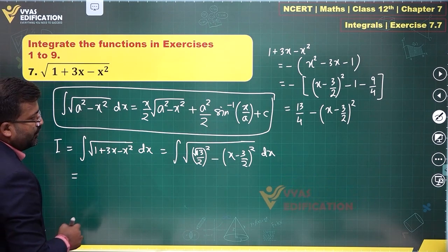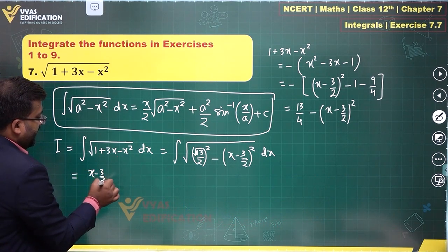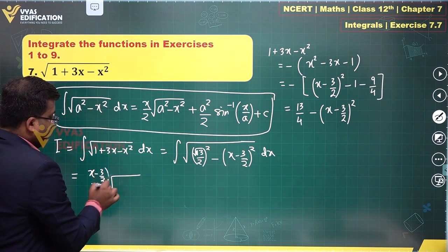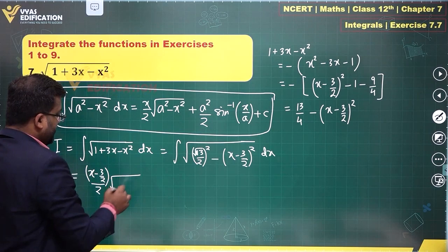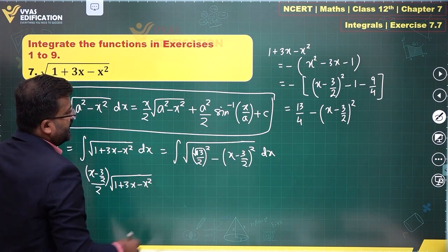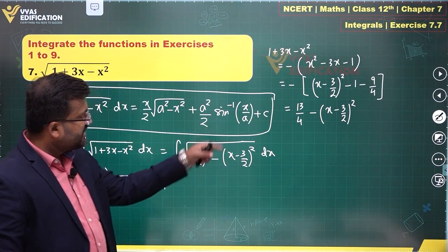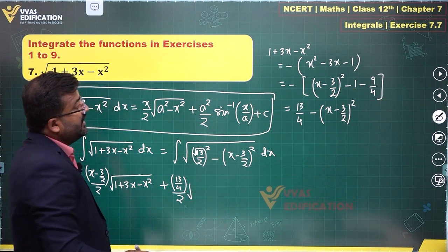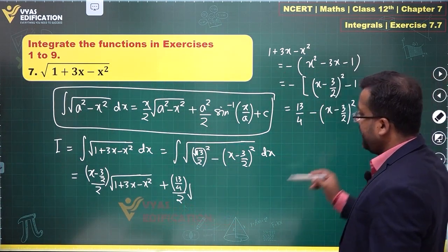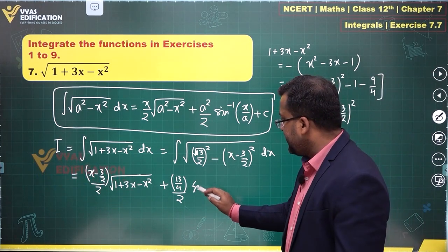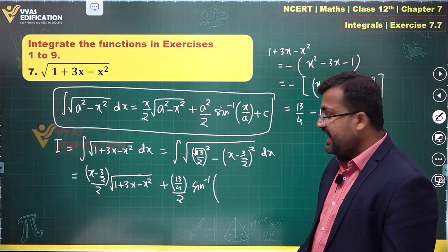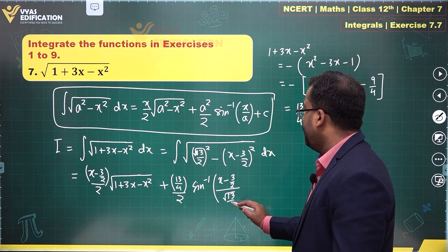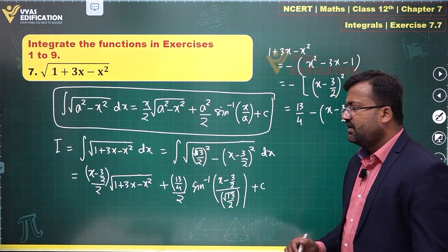Applying the formula: instead of x we have (x - 3/2), so the first term is (x - 3/2)/2 times √(1 + 3x - x²). Then a² = 13/4, so the second term is (13/4)/2 · sin⁻¹[(x - 3/2) / (√13/2)] plus constant of integration.